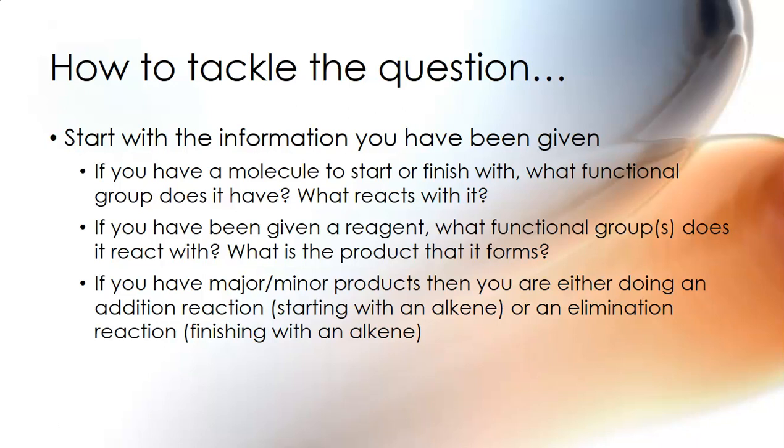If you've got major and minor products it's an absolute gimme because the only reactions that produce major and minor products are either addition reactions which start with alkenes or elimination reactions which finish with alkenes. So as soon as you have major and minor products you know you must have an alkene somewhere in there.